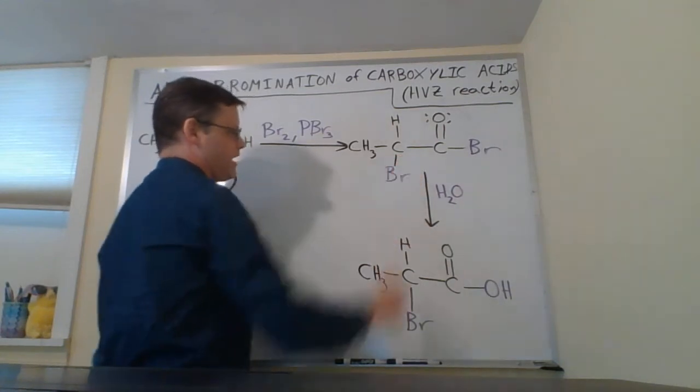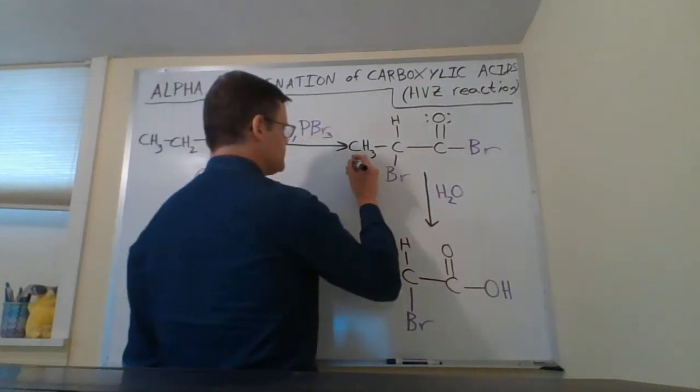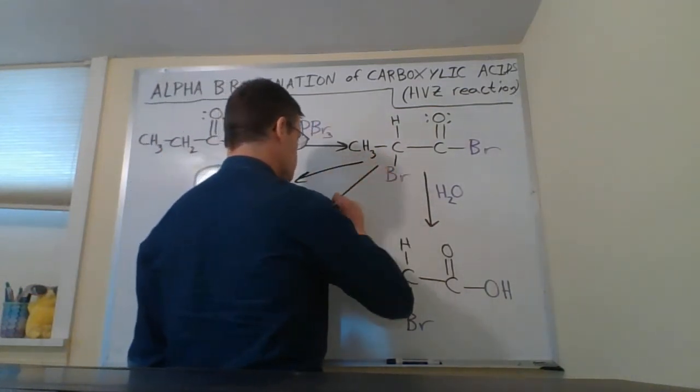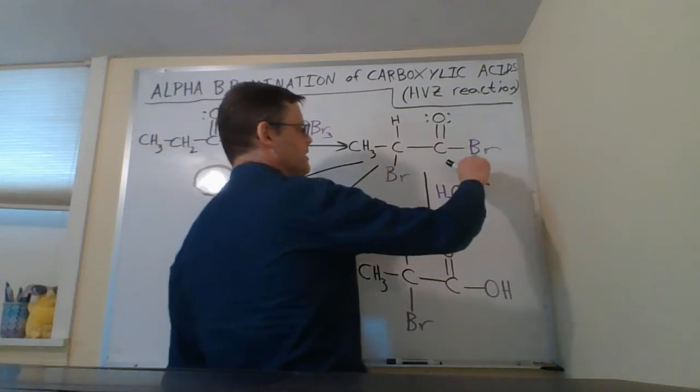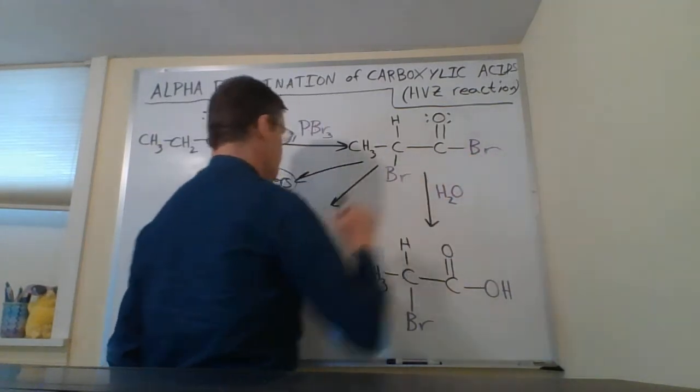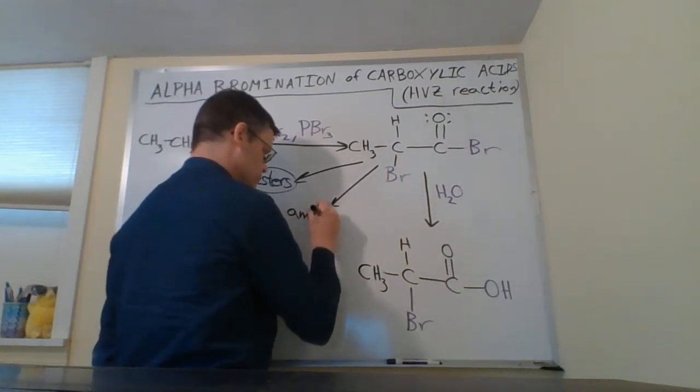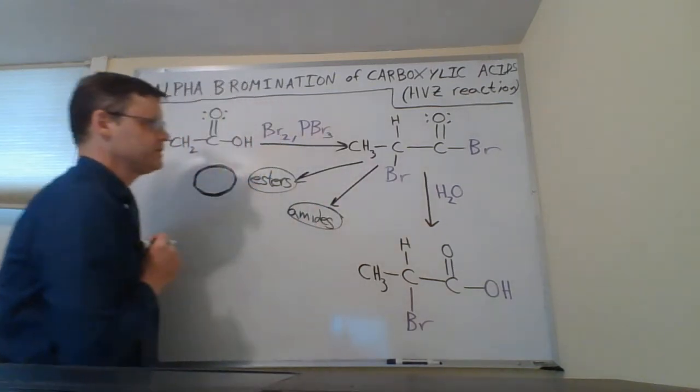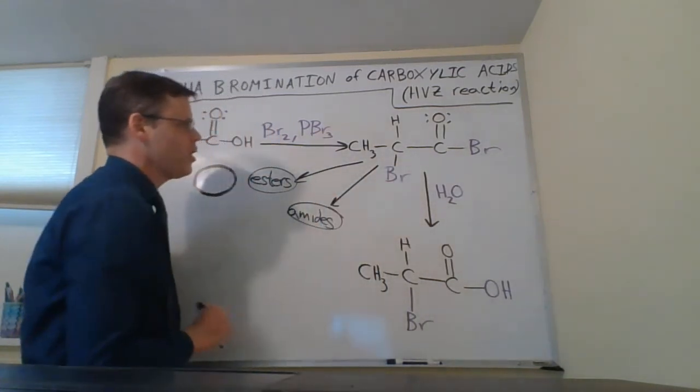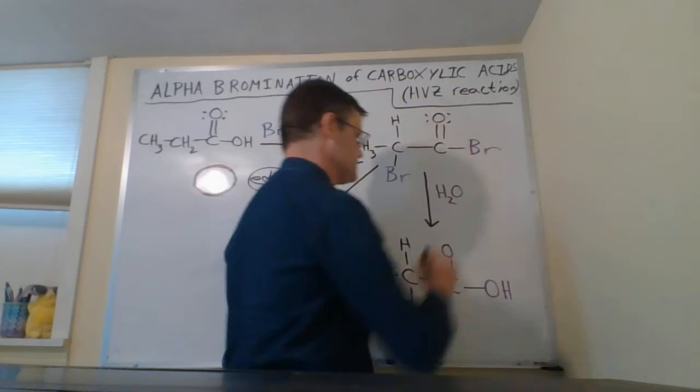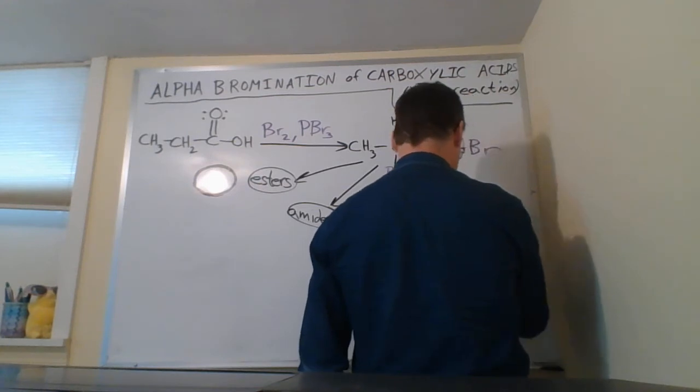From there, a couple different things could happen. If we react this with alcohols or amines, we could get esters—we could replace BR with OR, and that would make an alpha brominated ester. We could similarly get an alpha brominated amide if we used a primary or some sort of amine here.